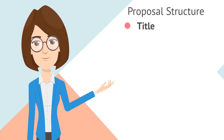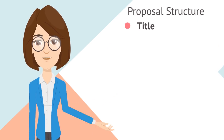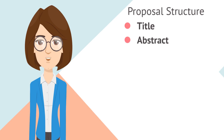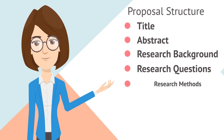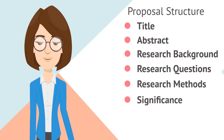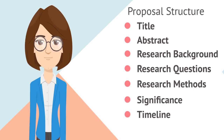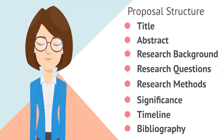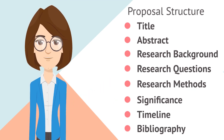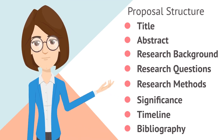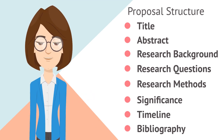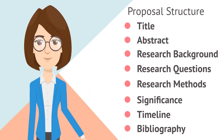The proposal starts with the Title, followed by Abstract, then Research Background, Research Questions, Research Methods, Significance, Timeline, and finally Bibliography. We will be breaking down each of those sections and telling you what should be included in each part. Please note that the sections might change depending upon your university or topic, but these sections provide a baseline and the fundamentals are expected to remain the same.